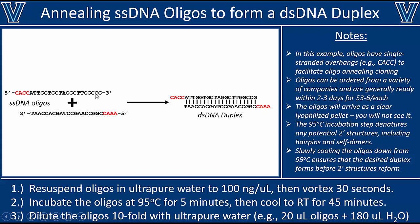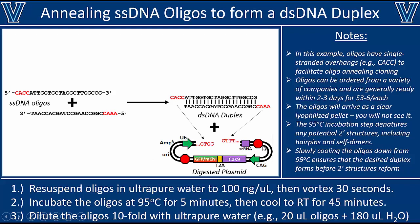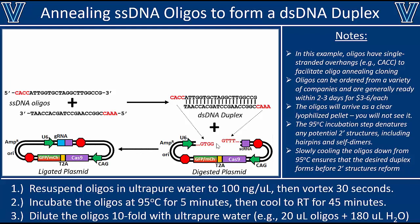You get both of those oligos, and what we would hope happens is that if you mix them together in solution, the base pairs would find and bind one another to form a duplex that has a double-stranded region — that's your guide RNA — and some flanking sticky ends that we can use to ligate this duplex into the Cas9 expression plasmid that has complementary sticky ends, giving us the desired expression plasmid that expresses Cas9 and a guide RNA.